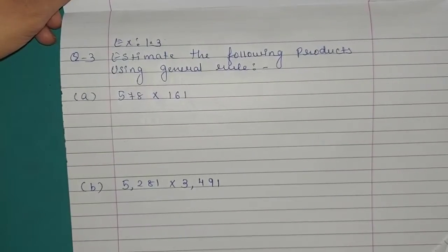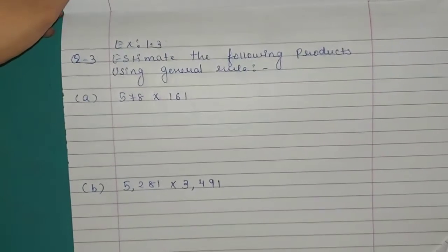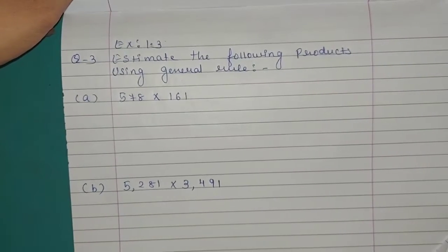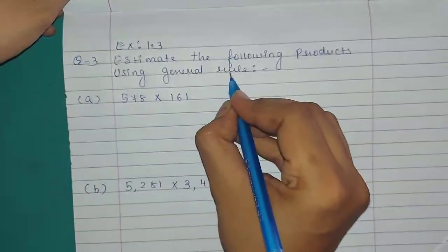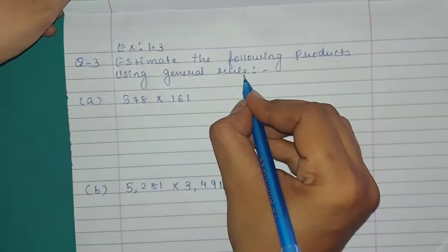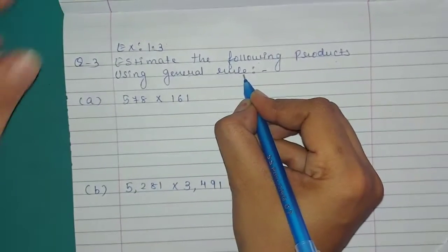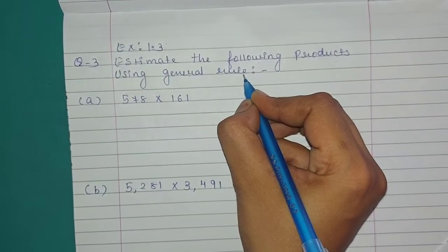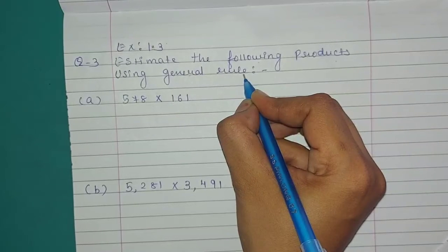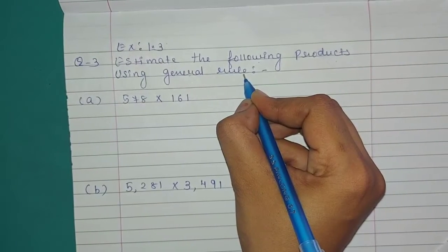Exercise 1.3, Question number 3: Estimate the following products using the general rule. The general rule is that we have to round off each factor to its greatest place, and then we have to multiply the rounded off factors.